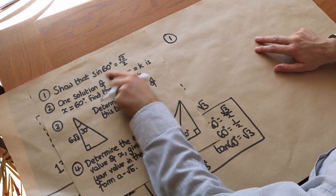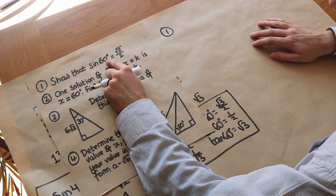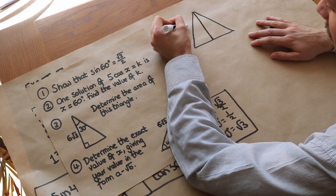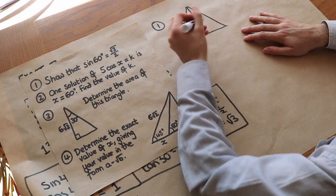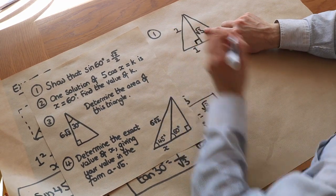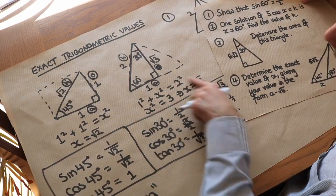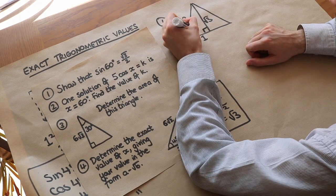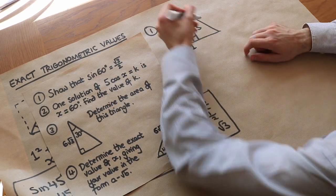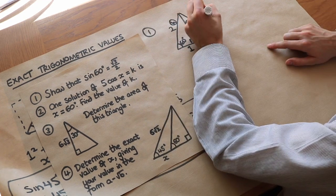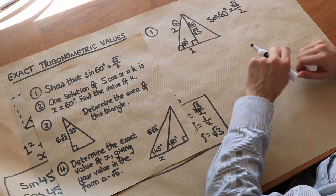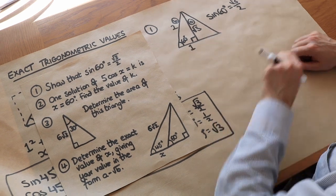Question 1: show an exact trig value. For 60 degrees we use an equilateral triangle. Take an equilateral triangle, divide it in two, and make the side length 2 — so the half-base is 1. By Pythagoras theorem, the height is √3. Marking in the 60-degree angle, sine of 60 is opposite over hypotenuse = √3/2. Most of the working is shown through the diagram, but you should show how you obtained that √3.